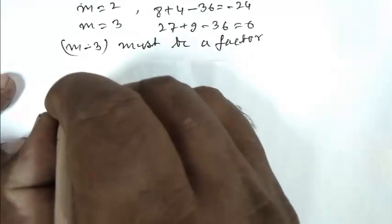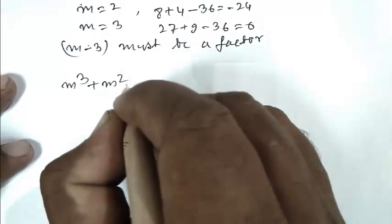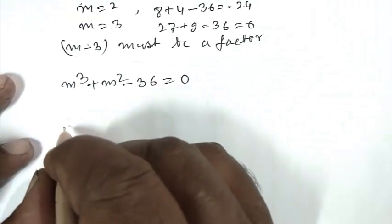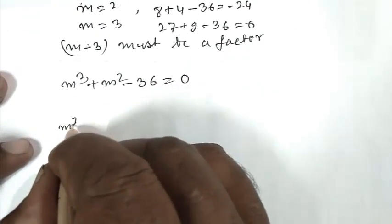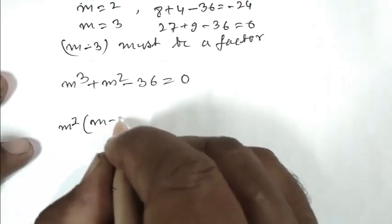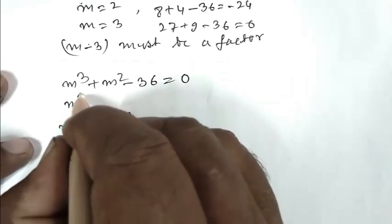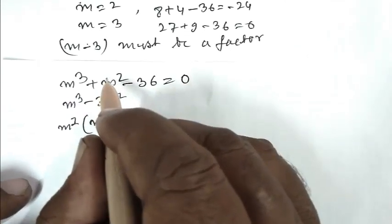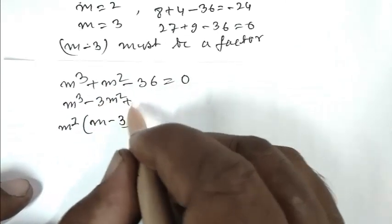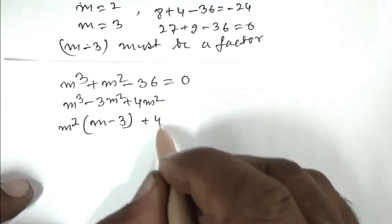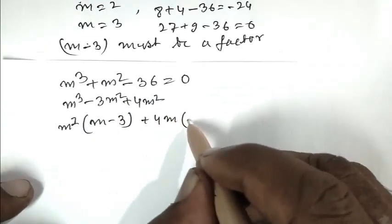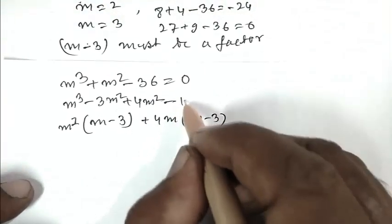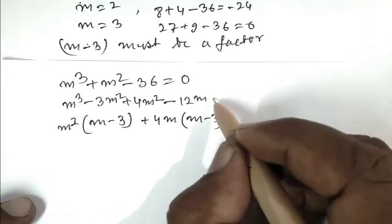So friend, we can write m cubed plus m squared minus 36 equals 0. We divide by (m minus 3): m squared times (m minus 3) gives m cubed minus 3m squared. So here we only have m squared remaining, so we need to add 4m squared. That gives 4m squared, and 4m times (m minus 3) gives 4m squared minus 12m.